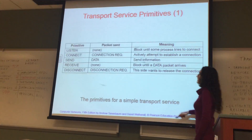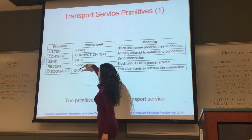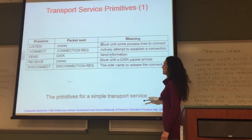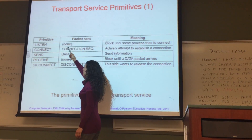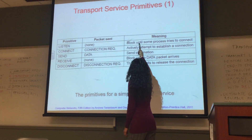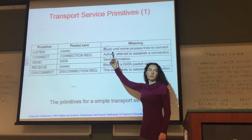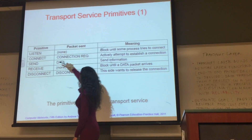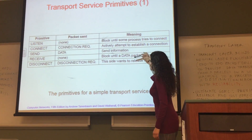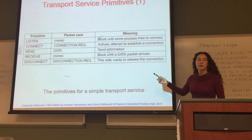This is the interface that the transport layer provides to the application layer — these are the primitives for a simple transport entity. It is listening or waiting for processes to send data or to request network connections. Blocking means it's waiting, sleeping, until a network connection request comes in. Connect means there's a request for connection, so it's trying to establish a connection. When the connection is established, it can send data and receive data. And when it's finished, it has to disconnect.